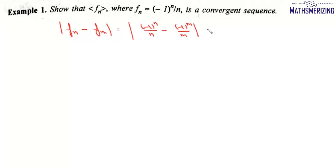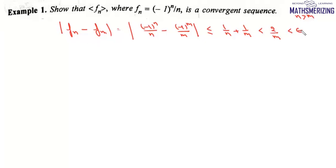This expression will always be less than or equal to 1/n plus 1/m. If n is greater than m, then it will be less than 2/m. So if |fn minus fm| is less than epsilon, then m must be greater than 2 upon epsilon.